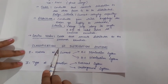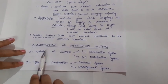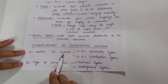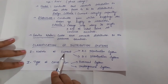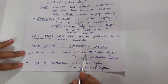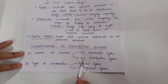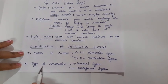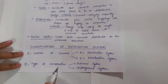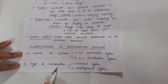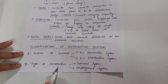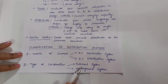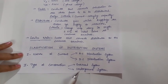Distribution systems are classified based on the nature of current. Based on the nature of current, it can be the AC distribution system and the DC distribution system. Based on the type of construction, the distribution system is divided into two types: the overhead system and the underground system.